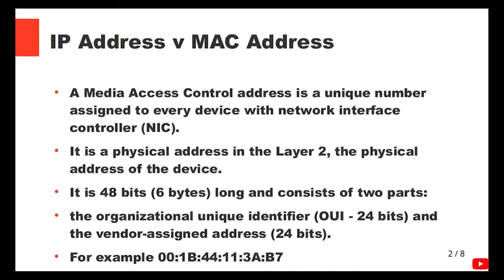There are no two devices with the same MAC address — or there shouldn't be. It is a physical address at layer 2. It consists of 48 bits — 6 bytes — and has two parts of 24 bits each: the first is the organizational unique identifier (24 bits) and the second is the vendor-assigned address (24 bits). Each vendor like Apple, Microsoft, Hikvision, Dahua will have certain ranges, and then each device has its own unique address. That way, a switch can identify which device is which.